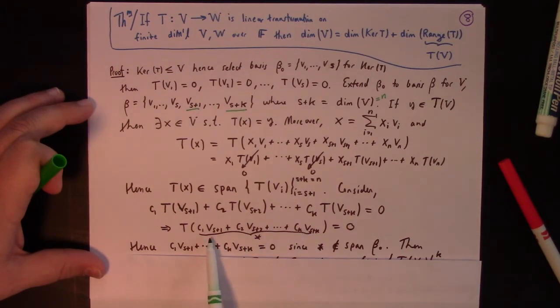If that's in the kernel and not zero, that means that there's a linear dependence between the last part of the basis for beta and the first part of the basis for beta, which would make beta linearly dependent. That would be very troubling. So in other words, this star must be zero since star is an element of the span of beta, is not an element of the span of beta naught.